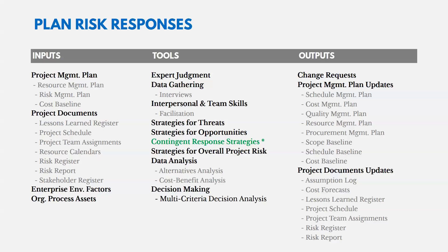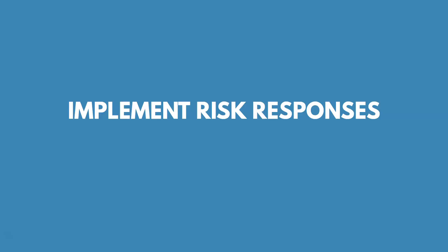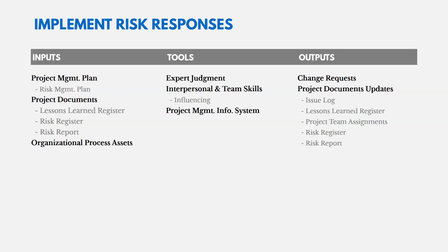As with other planning processes, you may submit a change request if needed, and you'll be updating your risk register, which is the most important output here. Moving to implementing risk responses — putting risk response plans into effect — key inputs are the risk register and risk management plan. As you implement your plans, there may be cases where responses aren't working, so you may submit a change request. You'll also continue updating your risk register throughout these processes.